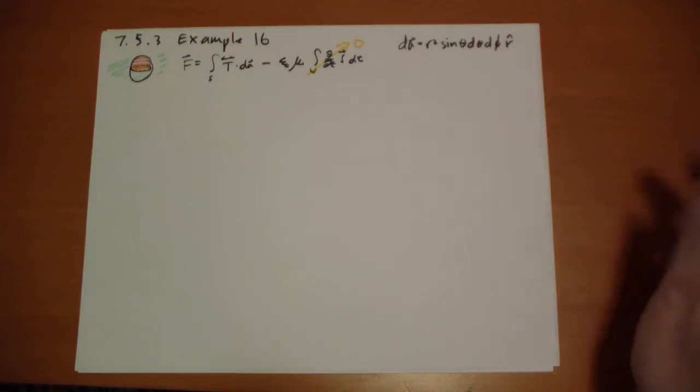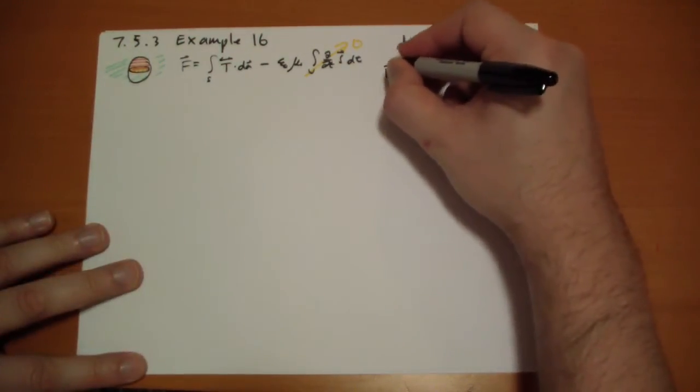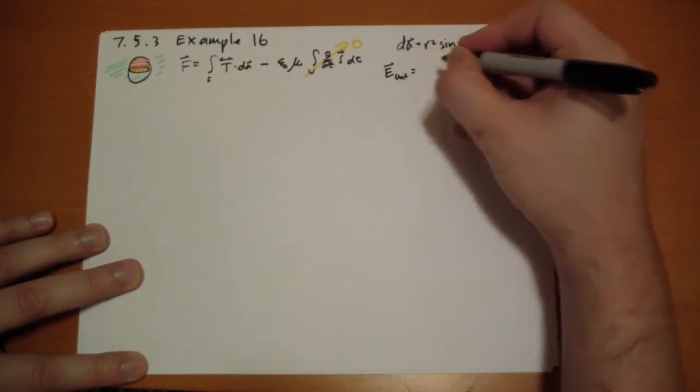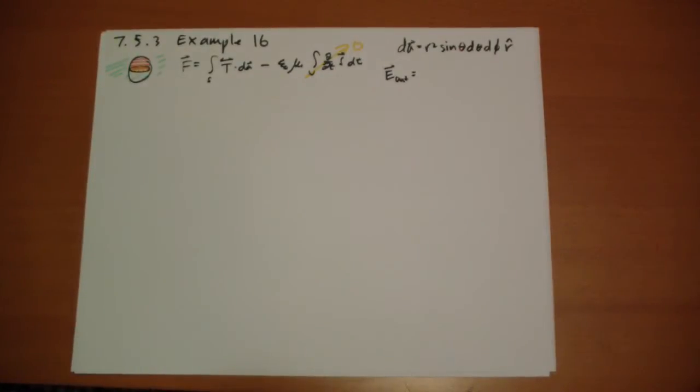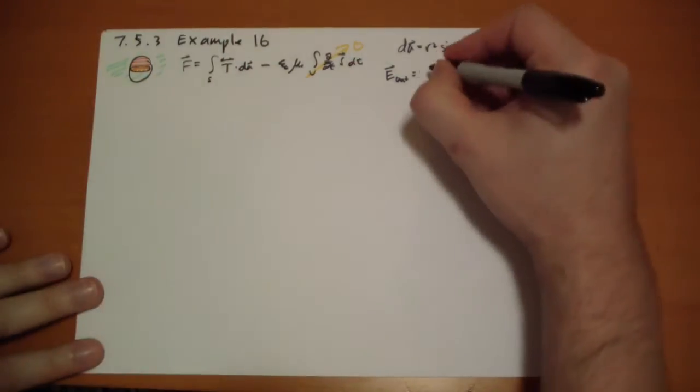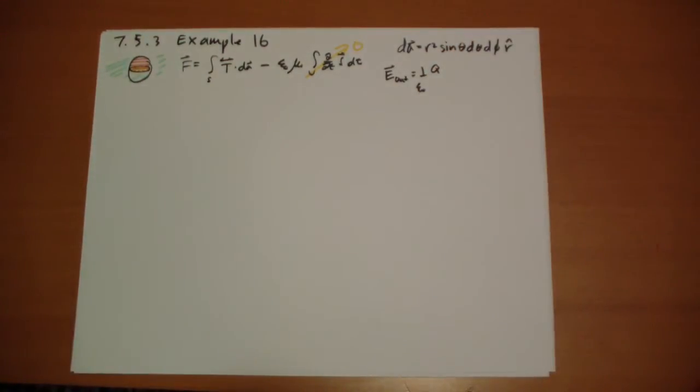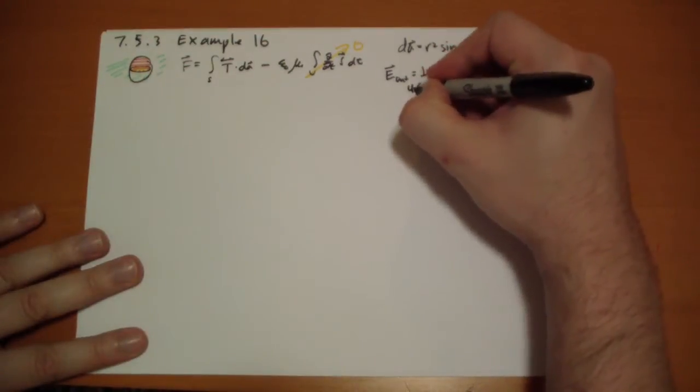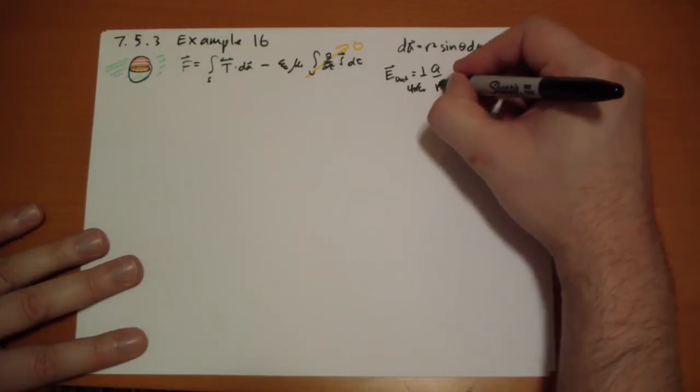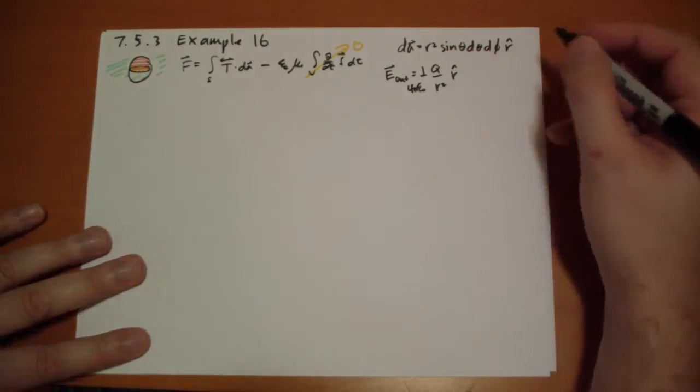Let's remind ourselves that the electric field outside, using Gauss's law really quick here, so the total charge enclosed is going to be the total charge. We have our one over epsilon knot here. The surface area is the surface area of a sphere, so that's four pi r squared. So we have one over four pi epsilon knot, q over r squared in the r hat direction.